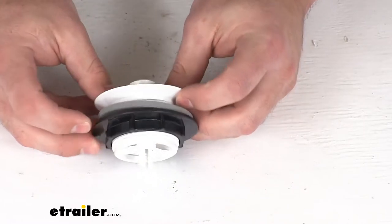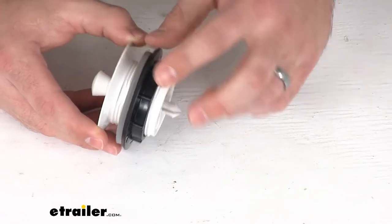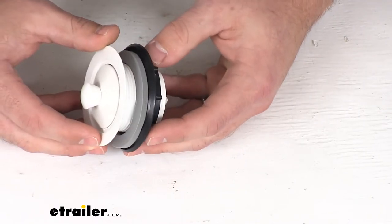This does come with both the strainer and the stopper as well as a foam gasket and a lock nut to ensure that it's going to sit snug at the bottom of your sink.